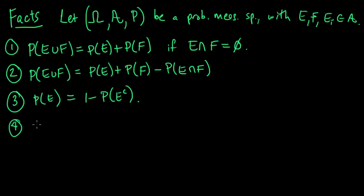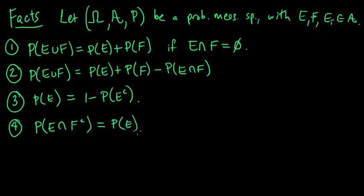Fact four: the probability of E intersect F-complement equals the probability of E minus the probability of E intersect F.